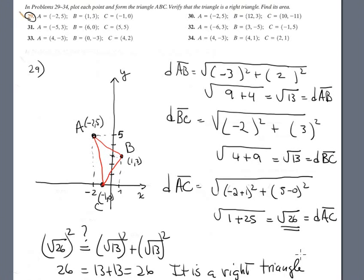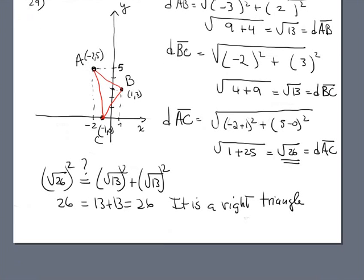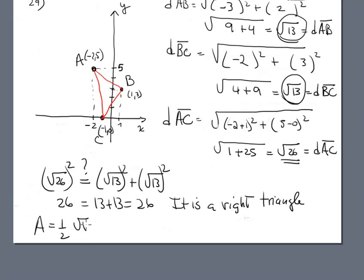Finally, find the area. The area formula is one-half times the product of the two smaller sides: one-half times square root 13 times square root 13. Square root 13 times square root 13 is obviously 13. So the area is 13 over 2.